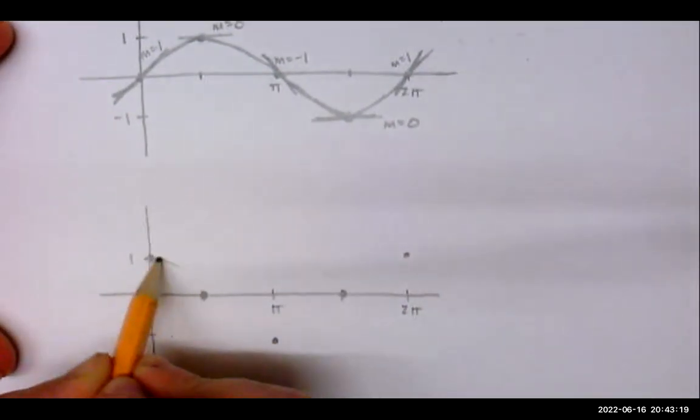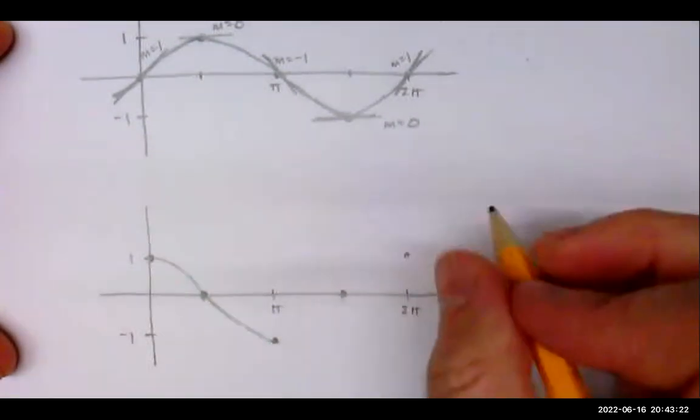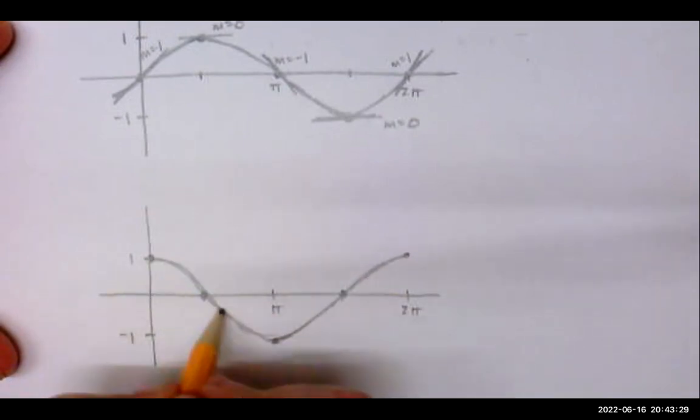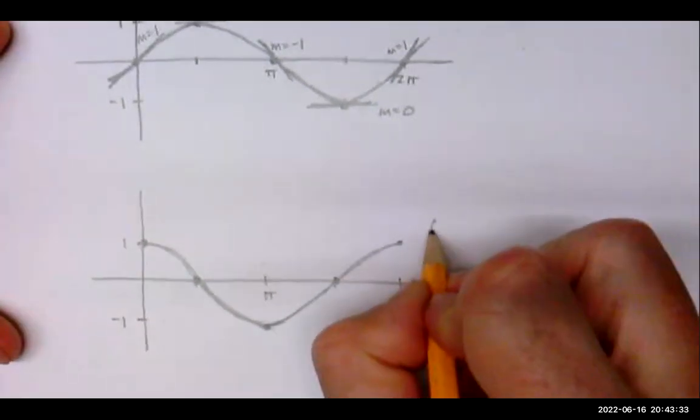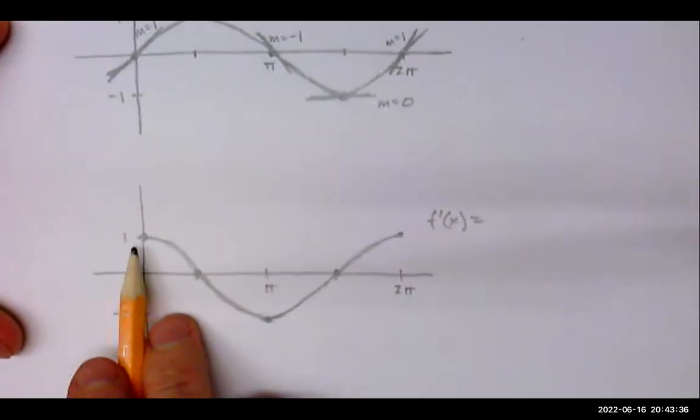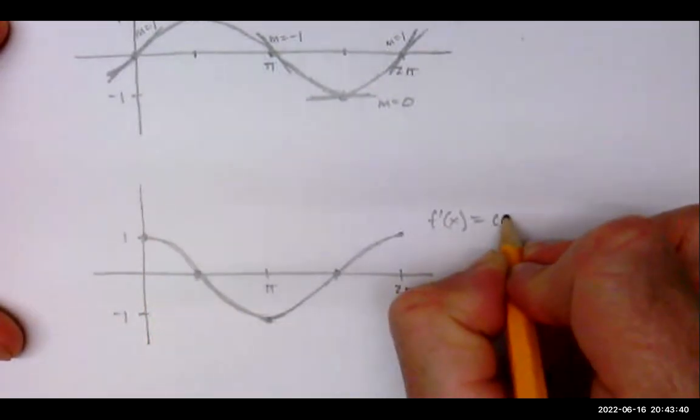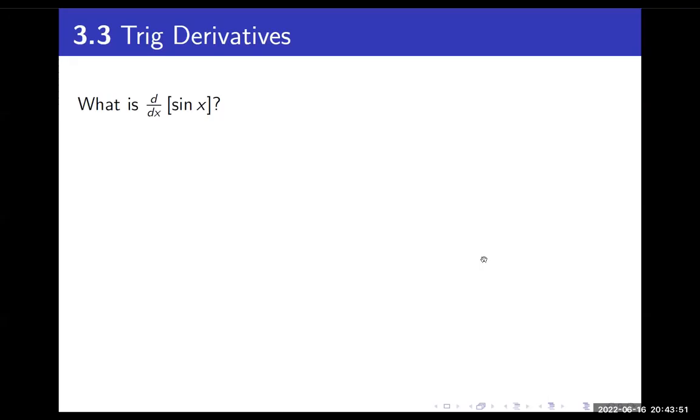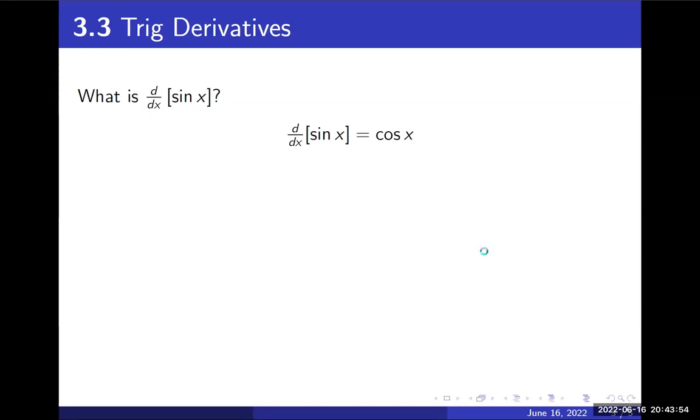If you connect those dots, maybe this will look familiar. That derivative starts at one, at π it's at negative one—that's cosine x! That's pretty amazing. The derivative of sine x is cosine of x. How awesome is that? It works out so nicely. Think of that as a derivative rule for sine x.